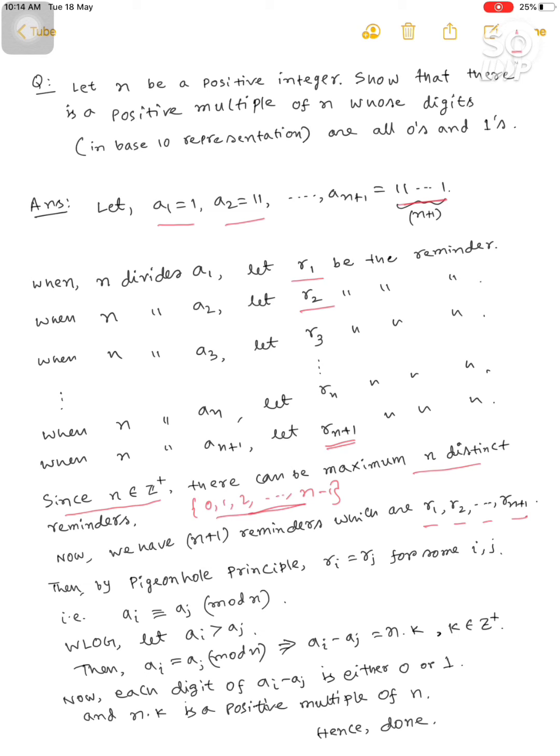Since there can be maximum n distinct remainders and we have n+1 remainders, then by the pigeonhole principle, two of the remainders should be equal. That is, let us take r_i = r_j for some i and j.